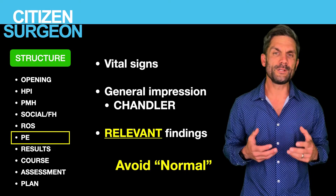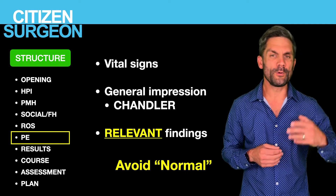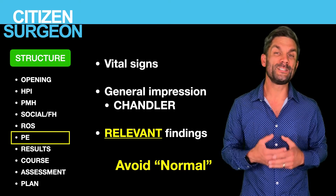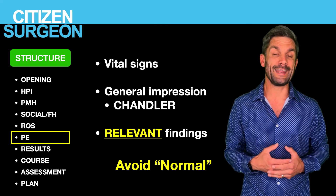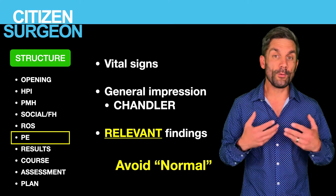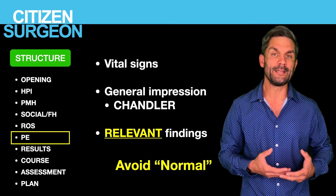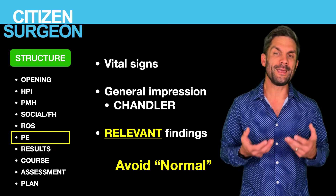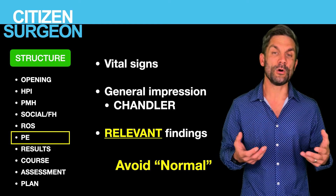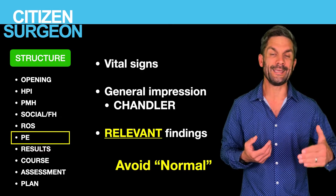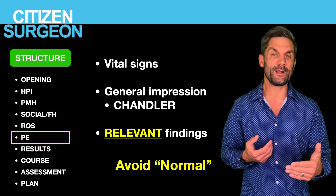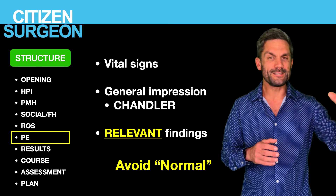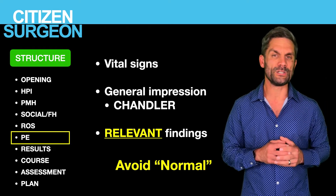Let's get to the physical exam. We want flow — start with the vital signs. You could say 'patient has reassuring vital signs,' or note trends: 'the patient has had worsening tachycardia overnight,' or 'they arrived to the emergency department hypotensive but responded to fluid resuscitation and are now normotensive.' For general appearance, I have the acronym Chandler: color, hydration, alertness, nutrition, disability, limbs, external support, and respiratory distress — I cover that in my talk on the abdominal exam. So present the vital sign trends and the general picture.